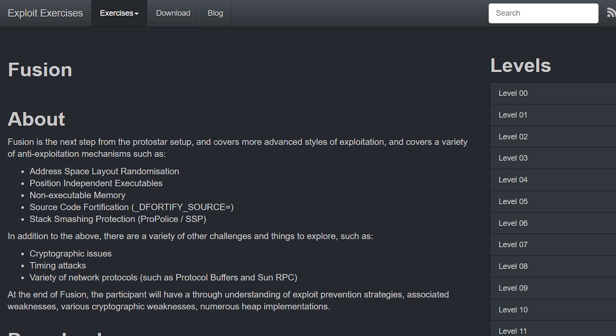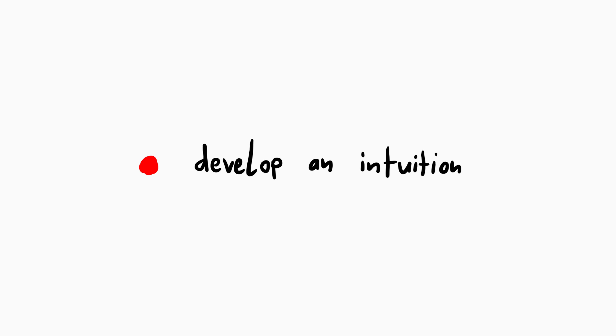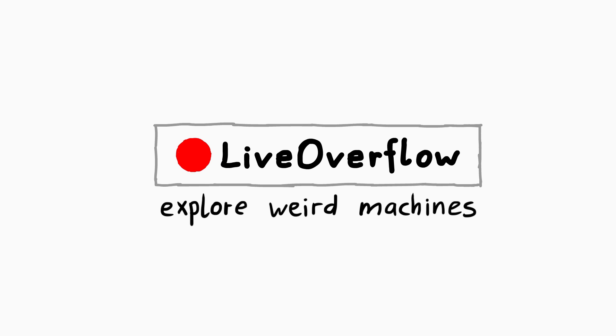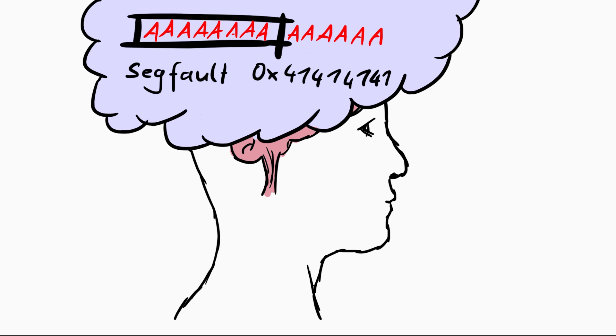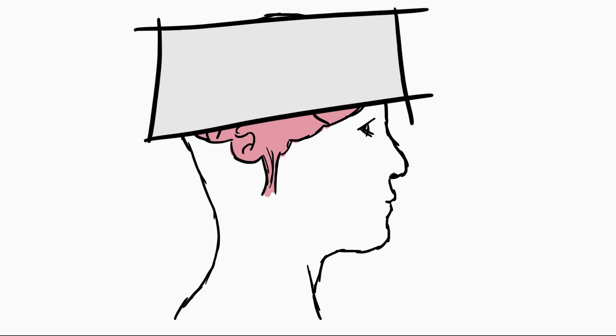But before we start talking about all these modern exploit mitigations and how we can bypass them, I think it would be a good idea to try putting what we have learned in more abstract terms and try to get a feeling or an intuition about exploiting binaries. Let's try to create a mental model of exploitation, but let's first introduce some constraints, otherwise it will be too abstract.